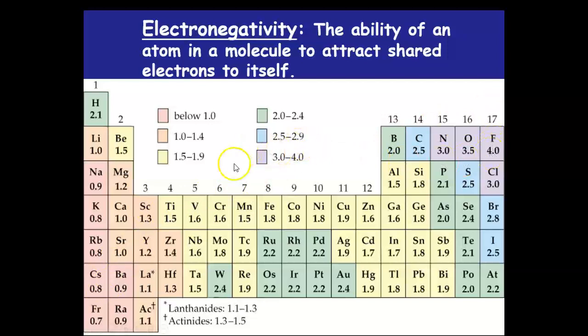On the other hand, if you look here and you see hydrogen and carbon, 2.5 minus 2.1 is 0.4. That is below 1. Zero, of course, is entirely covalent, like between hydrogen and hydrogen.